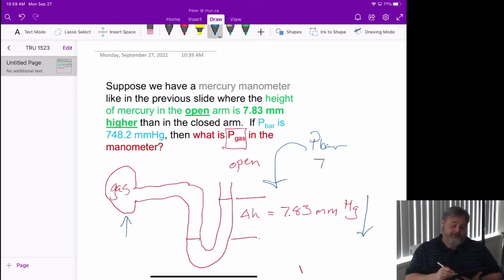So if we see this is 748.2 millimeters of mercury, that blanket is pushing down on effectively the gas in our bulb. But this is also pushing down. That means our pressure of the gas is going to have to be the sum of these two things in this case.